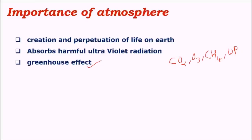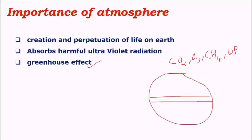Earth receives sunlight in differential amounts. The lower latitudes surrounding the equator, called the tropics, receive a high amount of solar rays, whereas higher latitudes in temperate and polar regions receive a lower amount. The regions surrounding the equator are energy surplus regions — they gain more of the sun's energy than is lost — whereas temperate and polar regions are energy deficit regions, where more heat is lost than gained.